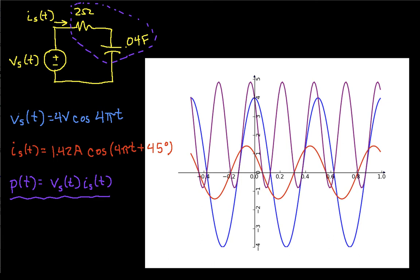You'll notice that we have the voltage in blue, so this is Vs of t. We have the current in red, so this is Is of t. And we have the power, the instantaneous power, in purple. So this is P of t.